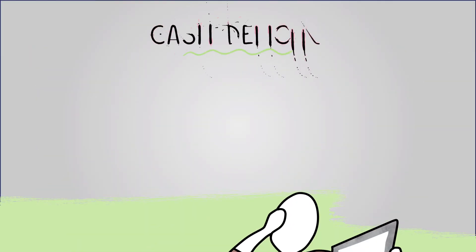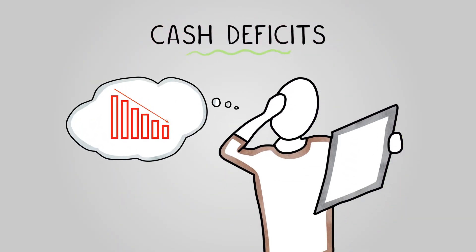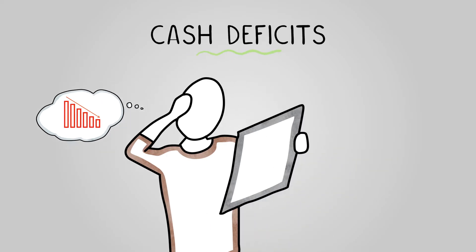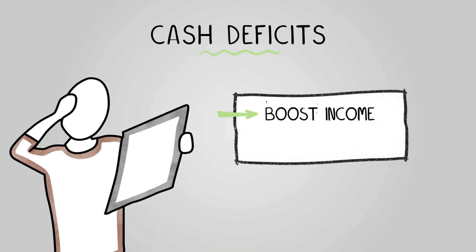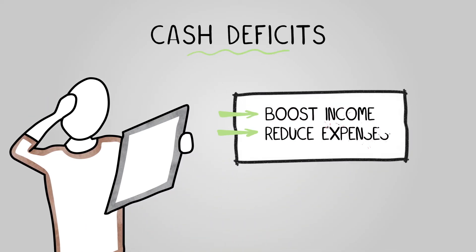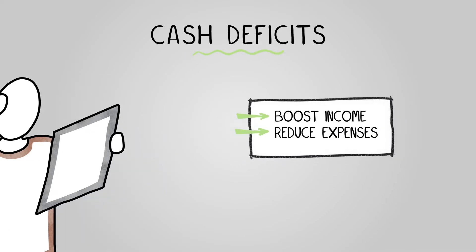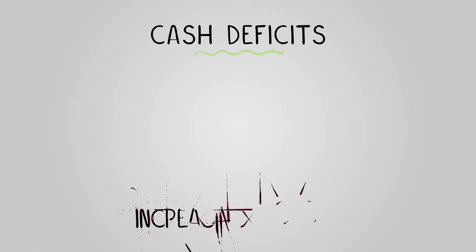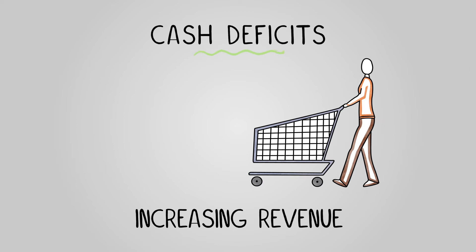Cash deficits occur when more money leaves a business than enters it. To address this, a business can either boost income or reduce expenses — there are a number of ways to achieve this. To combat a deficit, a company could look to increase its revenue.